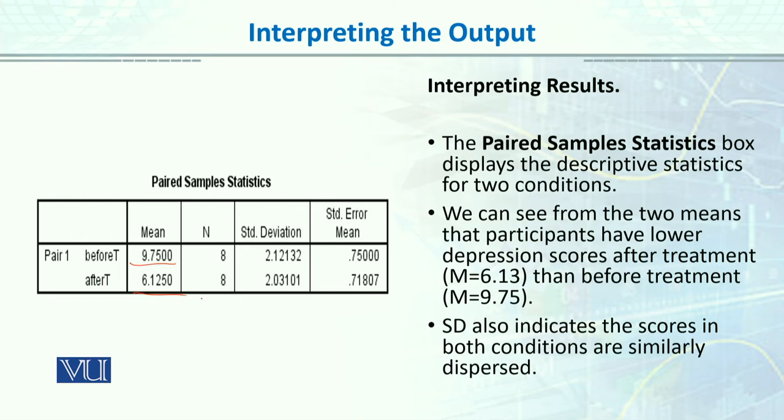But we do not know that it has significantly decreased or not. Standard Deviation also indicates the scores in both conditions are similarly dispersed. There is no difference in Standard Deviation. In both groups, our variability is the same.